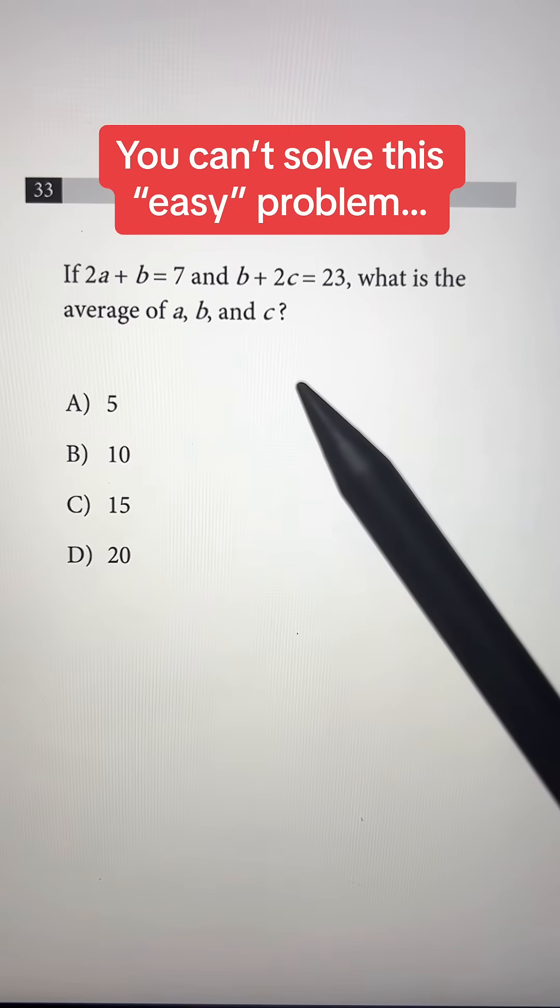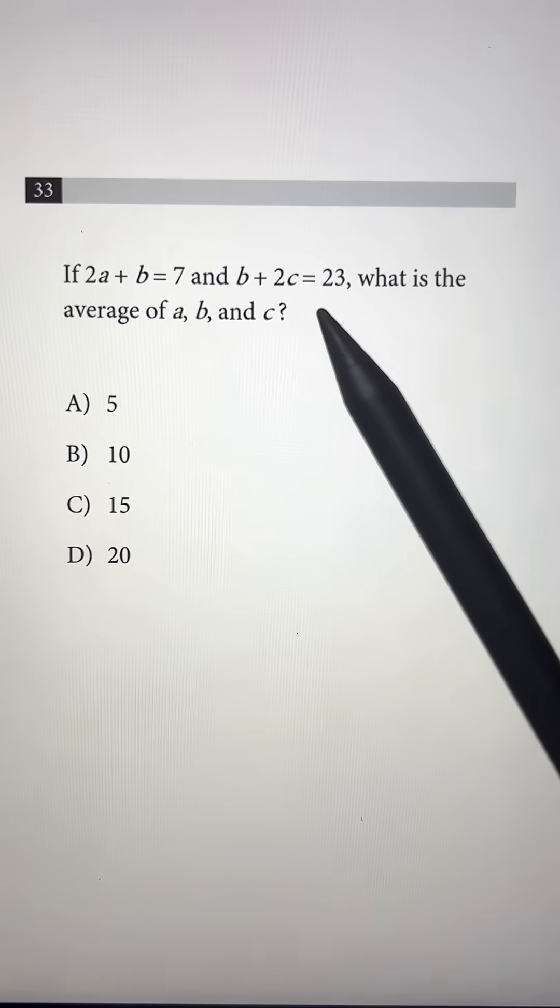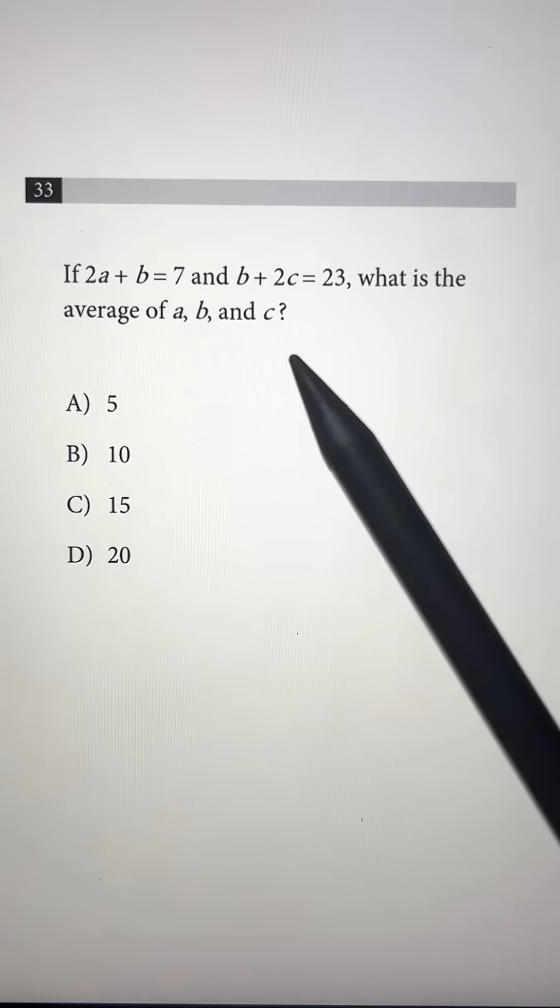This question looks easy, but it's so tricky you probably can't solve it. If 2a plus b is equal to 7 and b plus 2c is equal to 23, what is the average of a, b, and c?